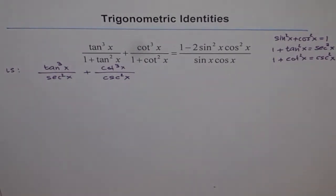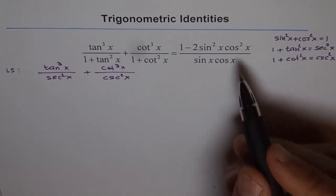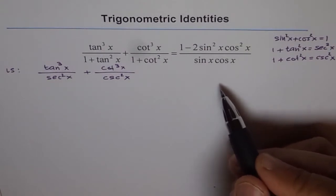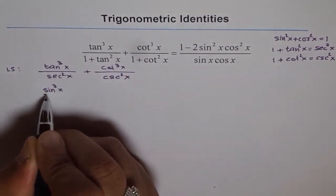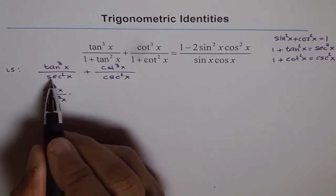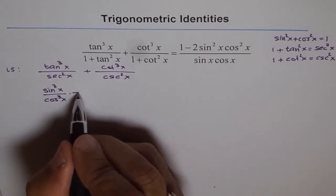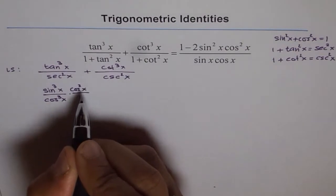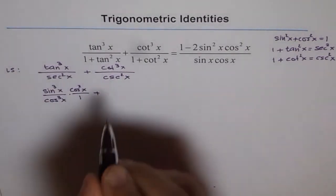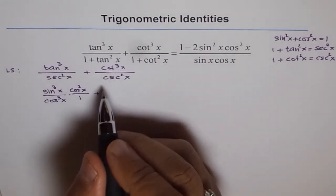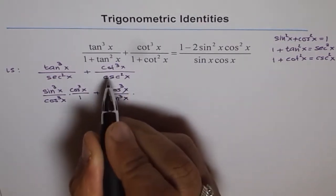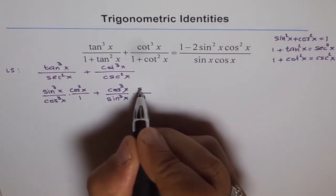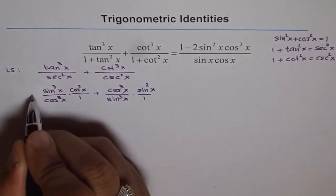Now we write everything in terms of sine and cosine, since the right side is in those terms. So tan³x becomes sin³x over cos³x, and sec²x becomes 1 over cos²x. Similarly, cot is cos over sine, so cot³x becomes cos³x over sin³x, and csc²x becomes 1 over sin²x.